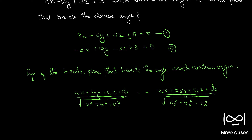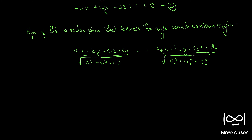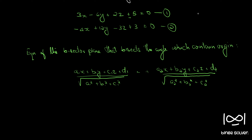If you're wondering why d1 and d2 have to be positive, I have discussed that in detail in a concept video connected to this question — you can find that video on my channel. Here, a1, b1, c1 are the direction ratios of the normal: 3, minus 6, 2 for the first plane, and minus 4, 12, minus 3 for the second.